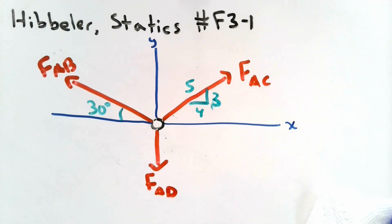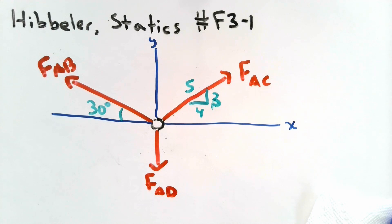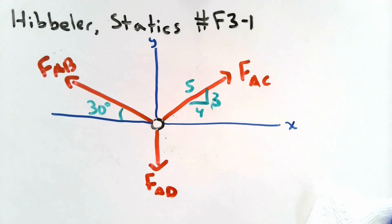This is our free body diagram for particle A. We identified the X and Y axes — X being horizontal and Y being vertical — and we converted each cable into a tensile force. Because they are tensile forces, they act from A outwards, which is why all the arrows are drawn that way. The tensile forces act along the direction of the cables, so the slopes and angles given for the cables correspond directly to our force vectors.